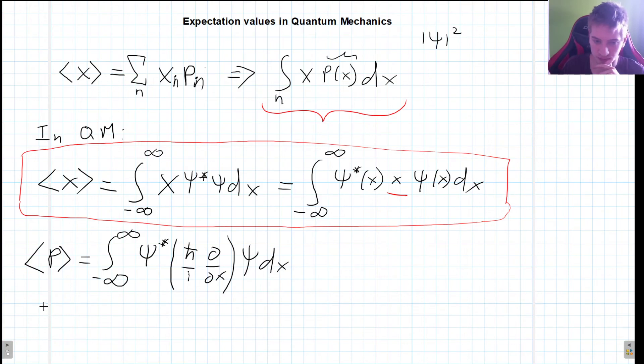So if we have some random expectation value of some function Q or operator Q, what this is going to be, this is just going to be the integral as before of psi conjugate, and here in the middle is going to be this Q of x psi dx. Okay, this is what you need to know.